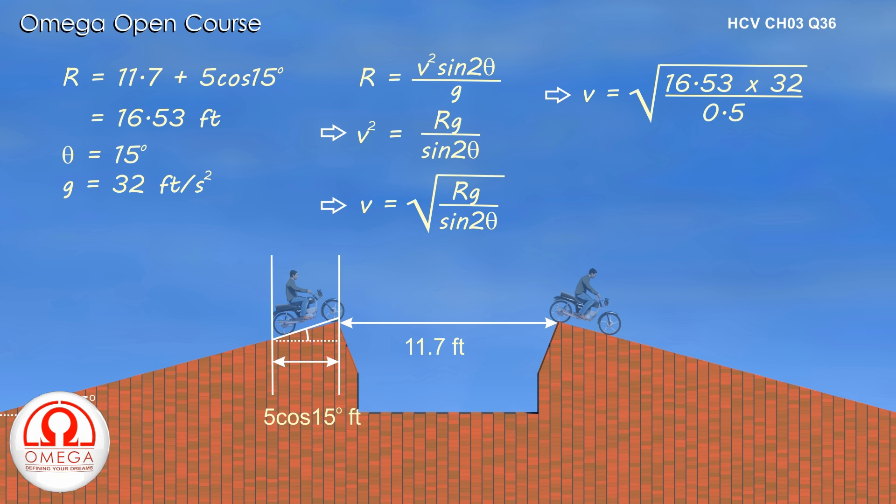Putting the values, we get v = √(16.53 × 32 / 0.5), or v = 32.5 feet per second. This is our answer.